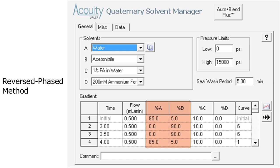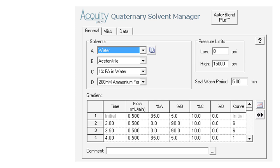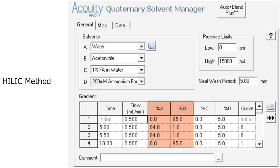This is the reverse phase method. It uses a gradient from reservoir A to B while drawing modifier from C. And this is the HILIC method. It uses a gradient from reservoir B to A while drawing the modifier from D.